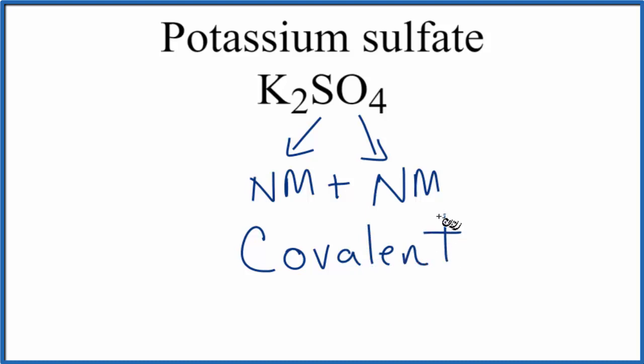We also call that a molecular bond. So the bond between the sulfur and the oxygen atoms, those will be covalent bonds. But the bonds between the potassium ions and the sulfate ion, that'll be an ionic bond. This is Dr. B with K2SO4, and thanks for watching.